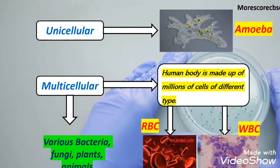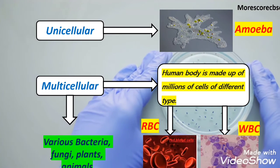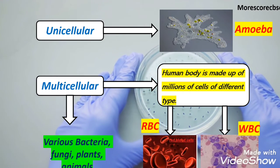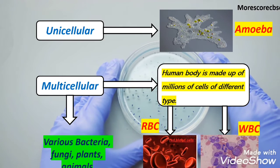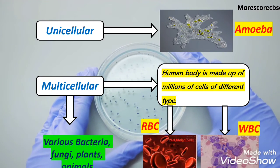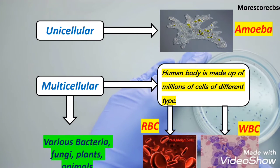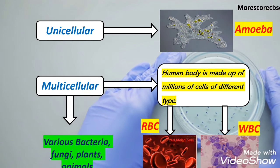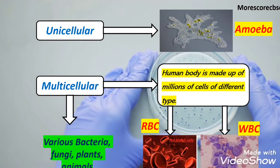An example of a unicellular organism is amoeba. An example of a multicellular organism is humans. The human body is made up of millions of cells of different types — for example, RBC, which carries blood to all parts of the body, and WBC, which provides immunity to our body.